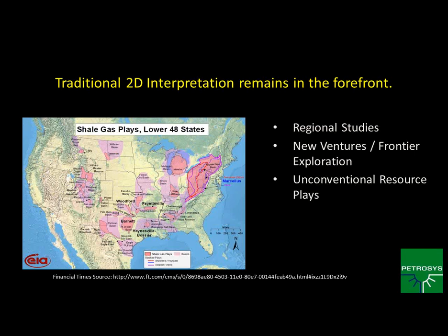Unconventional resource plays, which are becoming a very large part of oil and gas production — especially here in the United States — are going to be utilizing a lot of 2D data, whether looking at newer areas or combining areas where you have good 3D data. So even if we prefer working with 3D data, you're still going to be using 2D data, and Petrasys is a great tool for making large-scale regional maps.